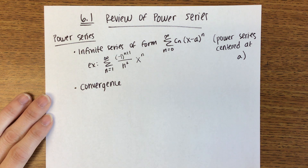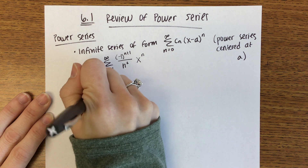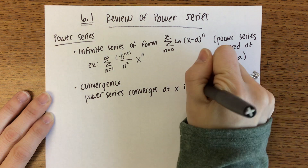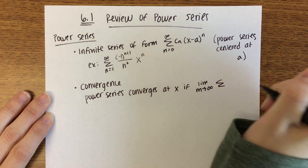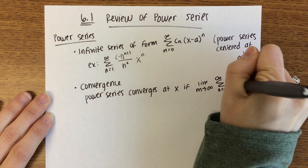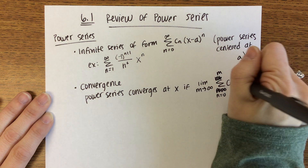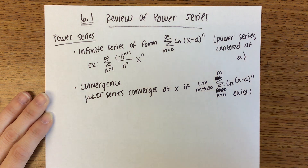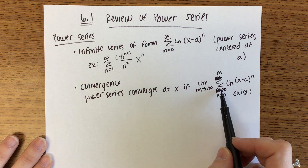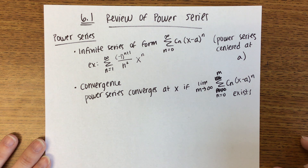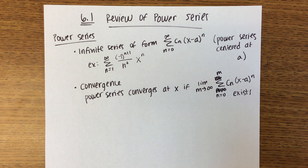We also need to review what it means to converge. We say that a power series converges at x if the limit as m approaches infinity of the sum from n equals 0 to m of c_n times x minus a to the n exists. Remember, this is a summation — you're finding a whole bunch of terms, adding them all together, going to infinity. If that sum does exist, then we say the power series converges.